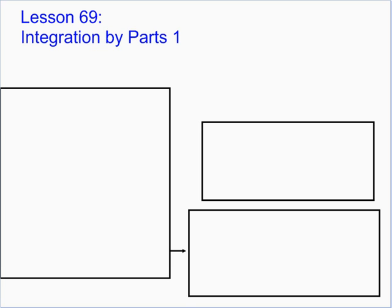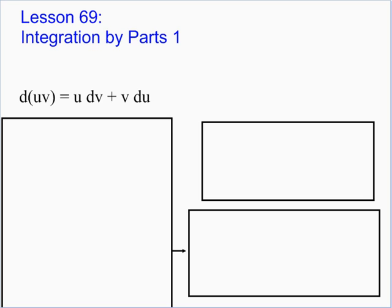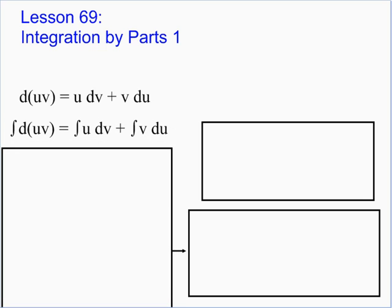The method comes from the idea of the product rule for differentials. The differential of uv, using the product rule, is the first times the differential of the second plus the second times the differential of the first. We want to be dealing with integration, so we're going to integrate both sides. The integral of the entire side equals the integral of each individual part because of the sum. The left side — they're inverses — so you just have u times v.